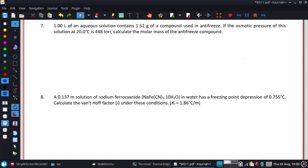All right, number seven. One liter of an aqueous solution contains 1.52 grams of a compound used in antifreeze. If the osmotic pressure of this solution at 20 degrees Celsius is 448 torr, calculate the molar mass of the antifreeze compound.